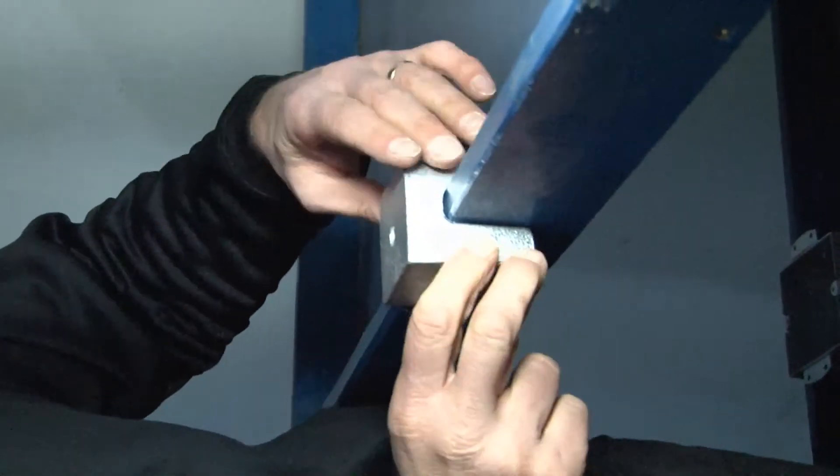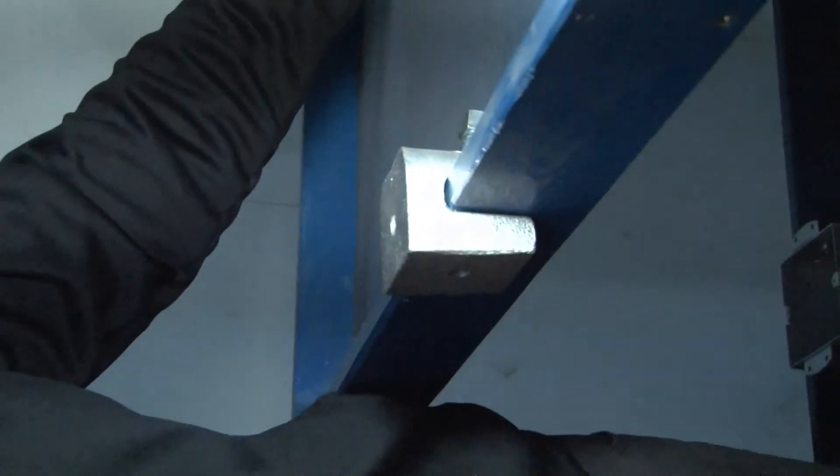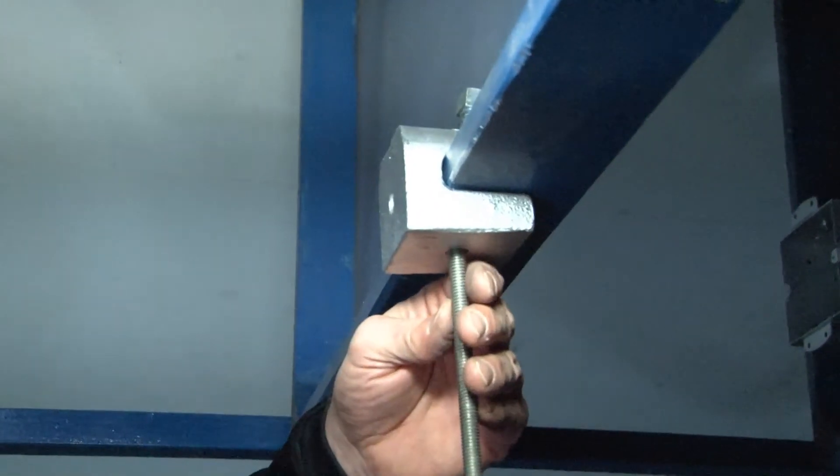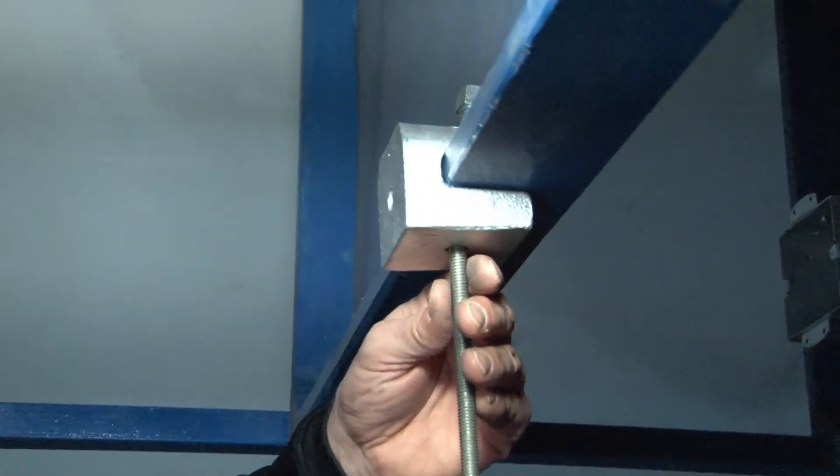Once your heavy duty beam clamp is securely in place, you're now ready to take your half inch threaded rod or a fastener, align it with the hole in the bottom and screw it in place.